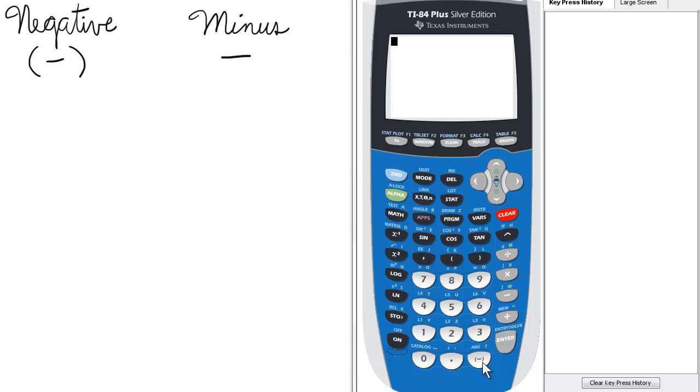So if we wish to enter the value of a number, such as negative 7, we do it thus on the keypad.